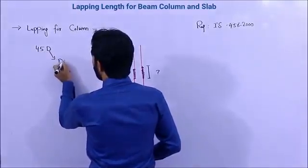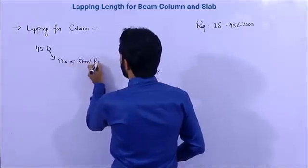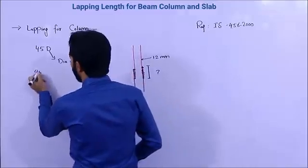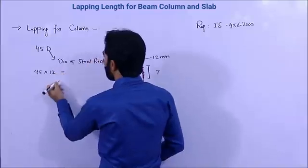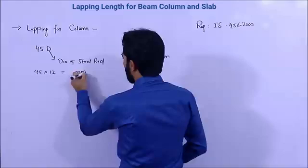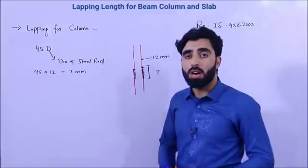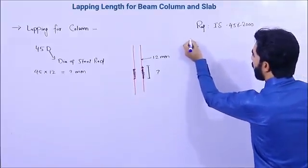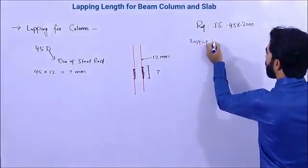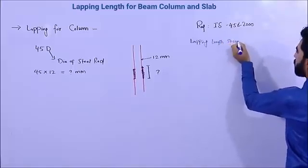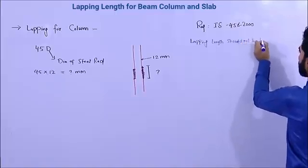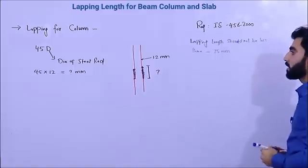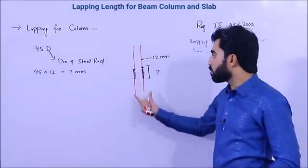Where d is the diameter of the steel rod. For example, if the diameter of the steel rod is 12 mm, the formula will be 45 × 12, giving you the lap length in mm. Also, for beam, column, and slab the lap length should not be less than 75 mm.